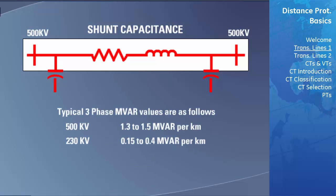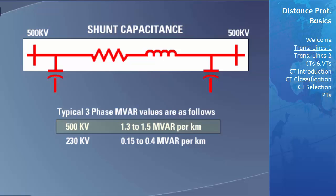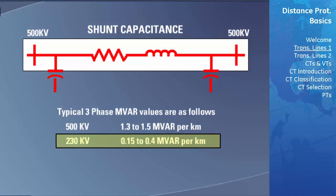Typical three-phase megavar values are 1.3 to 1.5 megavars per kilometer for 500 kilovolt lines and 0.15 to 0.4 megavars per kilometer for 230 kilovolt lines. Caution needs to be taken when transmission lines are used with high voltage potentials. Due to the Ferranti effect, the shunt capacitance on the line can become so large that the voltage on the far end of the line can rise higher than the normal line potential.